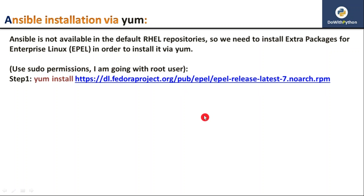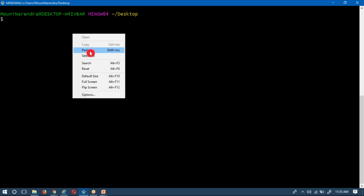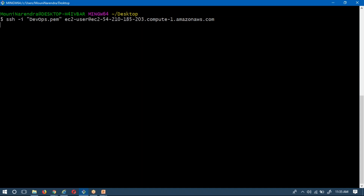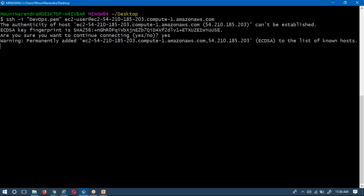The first step is to install the EPEL repository on your RHEL server. You can use the command 'yum install' to install that repository directly, or you can first download the RPM and install it using the RPM command. I am installing it directly using YUM. Let me open my RHEL server — I am using an AWS EC2 instance and logging in with Git Bash terminal.